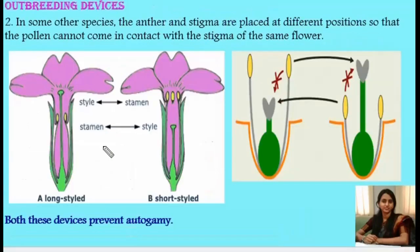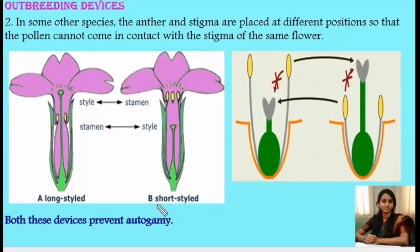The second outbreeding device is that the anther and stigma are placed at different positions. In a long-styled flower, the stigma and style are long while the filaments of the stamens are short, creating a large distance between the stigma and the pollen grains — so the chances of pollen reaching the stigma are very less. In short-styled flowers, the carpel is short and anthers are placed at a higher position, and similarly pollen contacting the stigma is very unlikely.